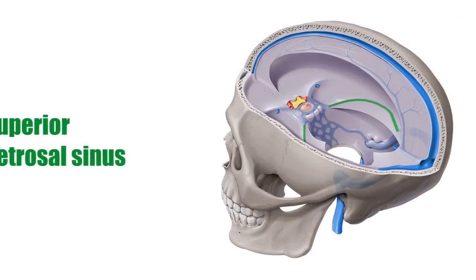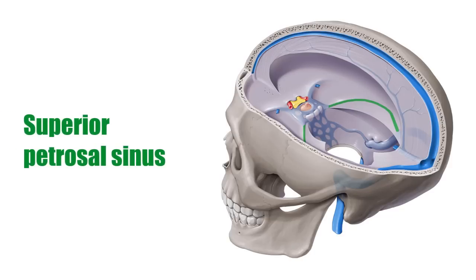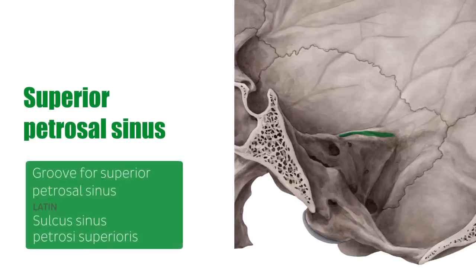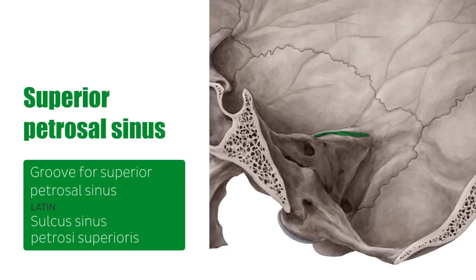The superior petrosal sinus runs along the superior aspect of the petrous part of the temporal bone in the base of the Tentorium cerebelli, in the groove called the groove for the superior petrosal sinus. It crosses over the trigeminal nerve before it enters Merkel's cave, and it terminates in the proximal part of the sigmoid sinus.